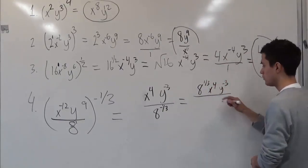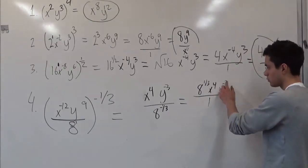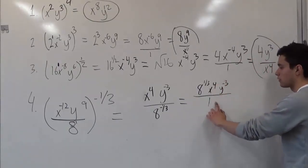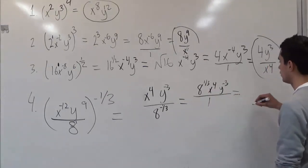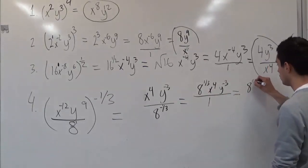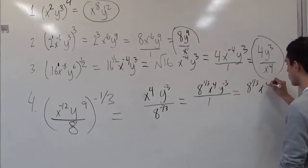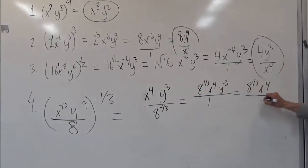So now we have to bring this one, since it's negative, to the bottom. So 8 to the 1 third, x to the fourth, over y to the third. However, this is not the full answer yet, because we need to simplify it.